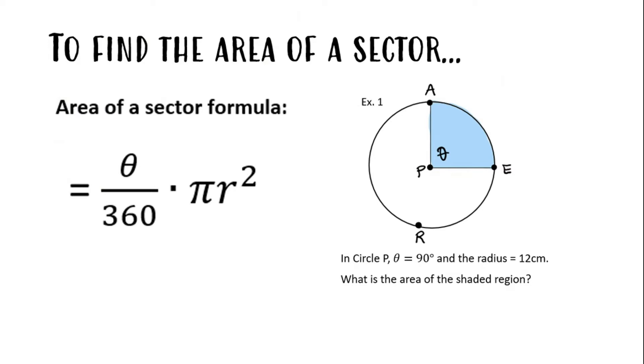To find the area of a sector, you'll use the area of a sector formula, which is theta over 360 times pi r squared.